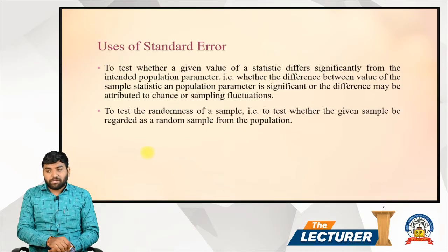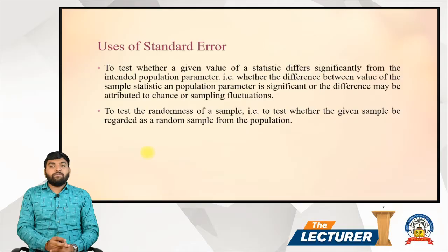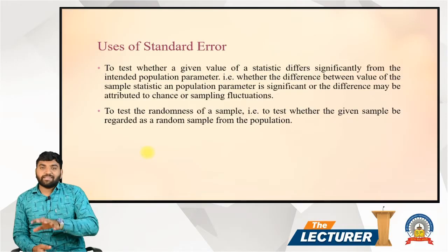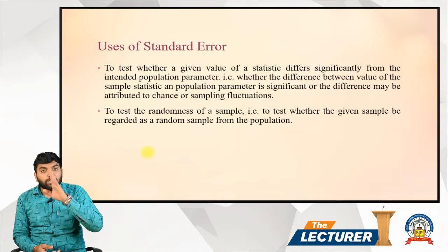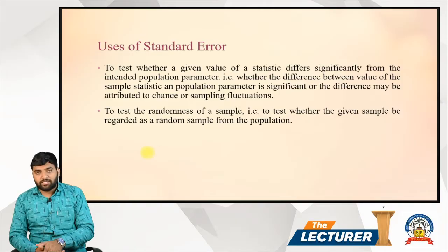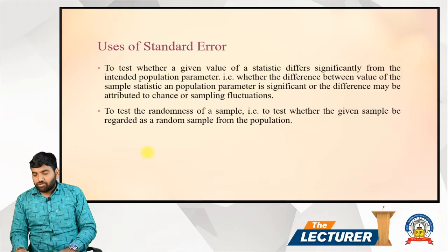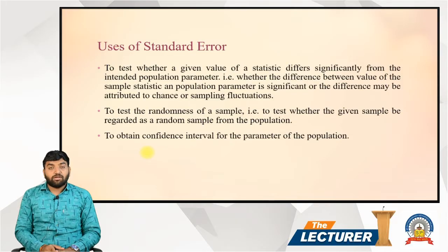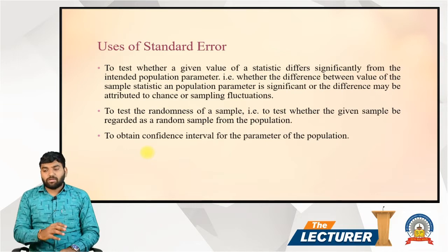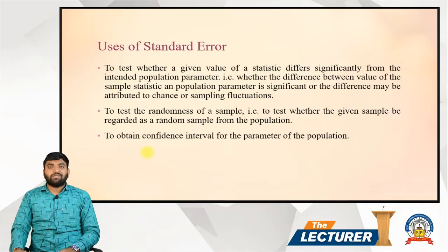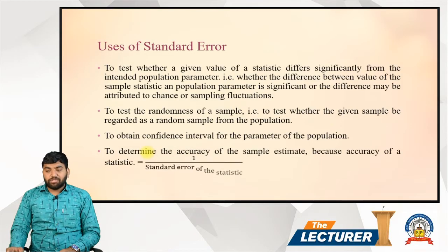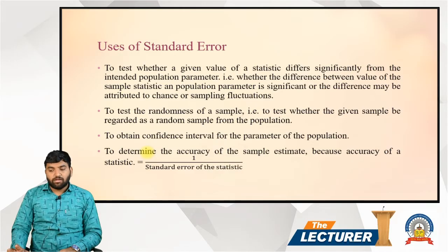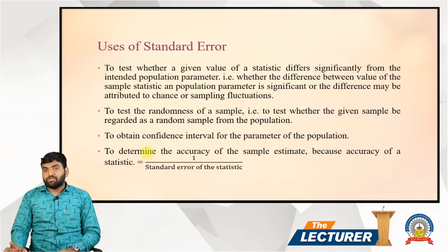Second, to test the randomness of a sample — that is, to test whether the given sample can be regarded as a random sample from the population. Third, to obtain confidence intervals for the parameter of the population. Fourth, to determine the accuracy of the sample estimate, because the accuracy of a statistic is equal to one divided by the standard error of that statistic.